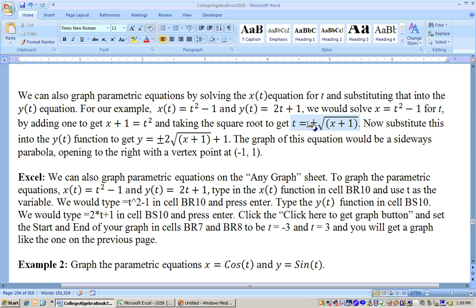Now substitute this into the y(t) function, and you would get y(t) equals 2 times plus or minus the square root of x plus 1 plus 1, which is plus or minus 2 times the square root of x plus 1 plus 1. This is definitely a sideways parabola whose vertex point is at negative 1, 1. Now it's pretty easy to graph these on Excel.